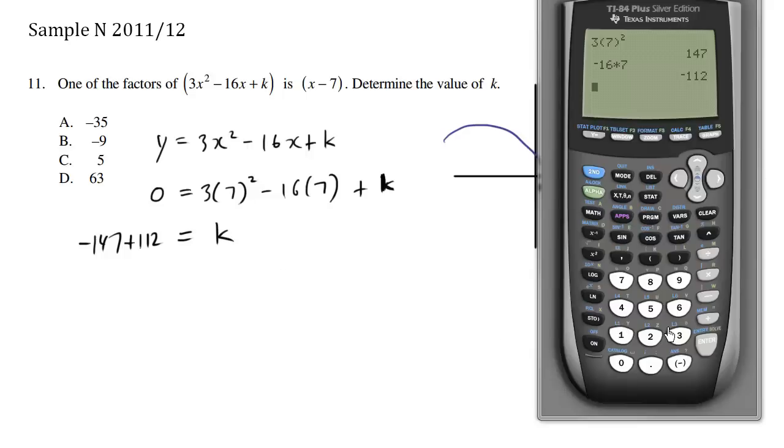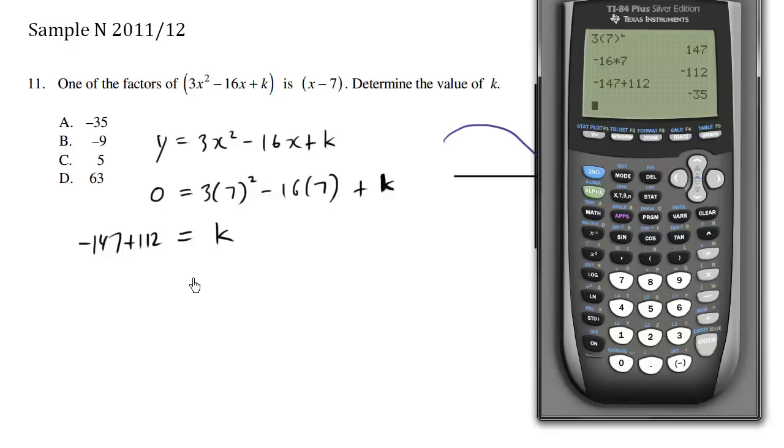So let me rewrite this. Negative 147 plus 112 equals negative 35. So we have negative 35 equals k. We determine the value of k, which is negative 35, which is choice A.